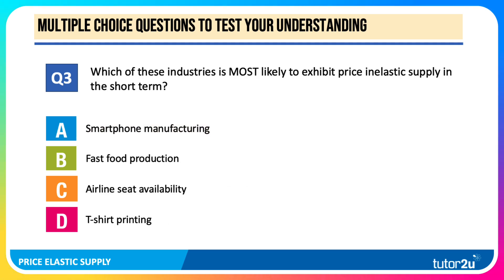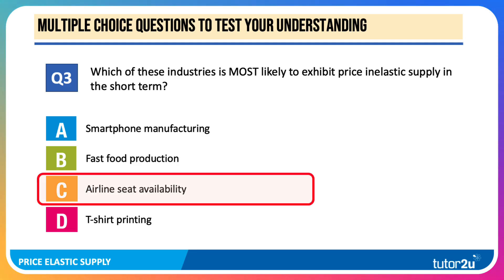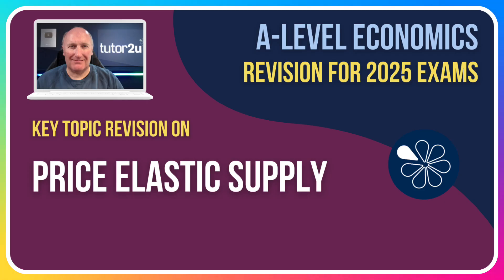Question number three: which of these industries is most likely to exhibit price-inelastic supply in the short term — smartphones, fast food, airline seats, or T-shirt printing? The answer is airline seat availability. There's often limited capacity on flights, the route network is established, airline timetables are built in, and it's not always easy to increase the number of seats available to customers. Thanks for joining in this video on price-elastic supply.